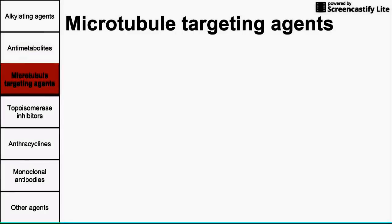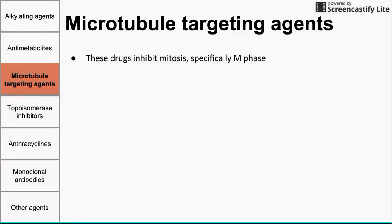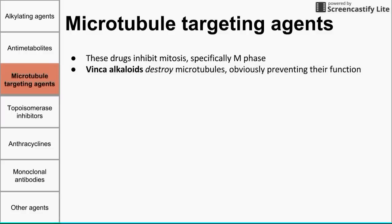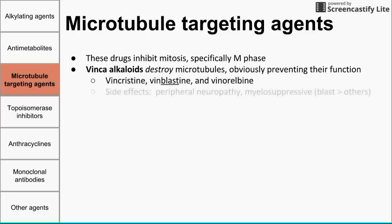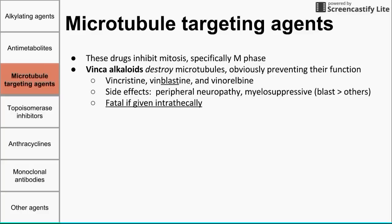Another class is microtubule targeting agents. These drugs inhibit mitosis, which occurs during the M phase, by targeting microtubule activity. Vinca alkaloids destroy microtubules, which prevents their function. Three vinca alkaloids are listed; side effects include peripheral neuropathy and myelosuppression. Vinblastine is the strongest of the three in suppressing the immune system — the strongest myelosuppressive chemotherapeutic drug. One critical point: vinca alkaloids cannot be injected directly into the spine — they are fatal if given intrathecally.